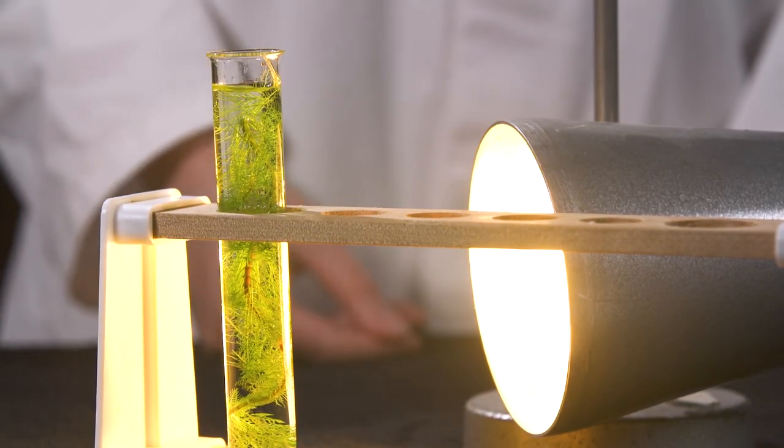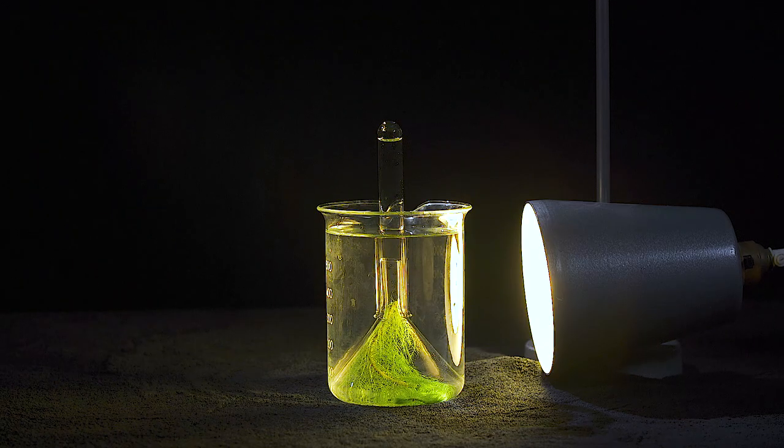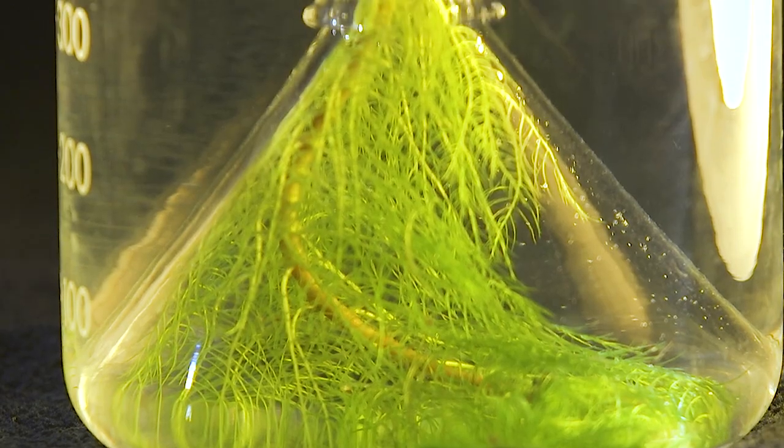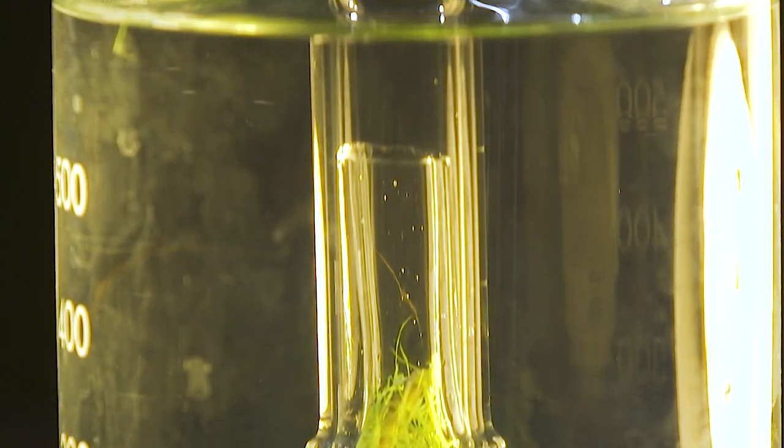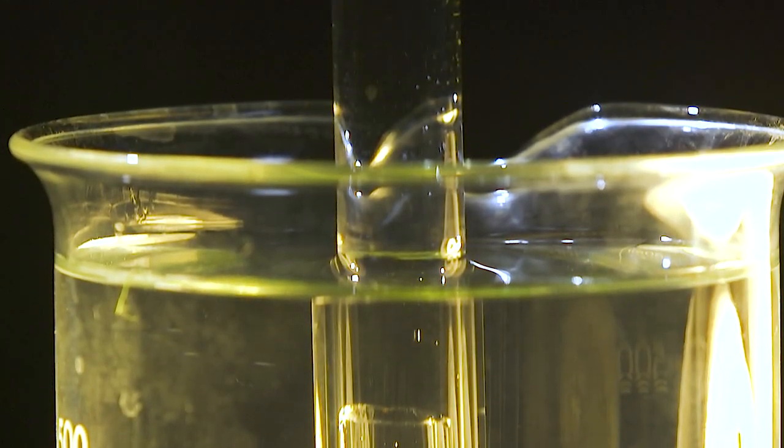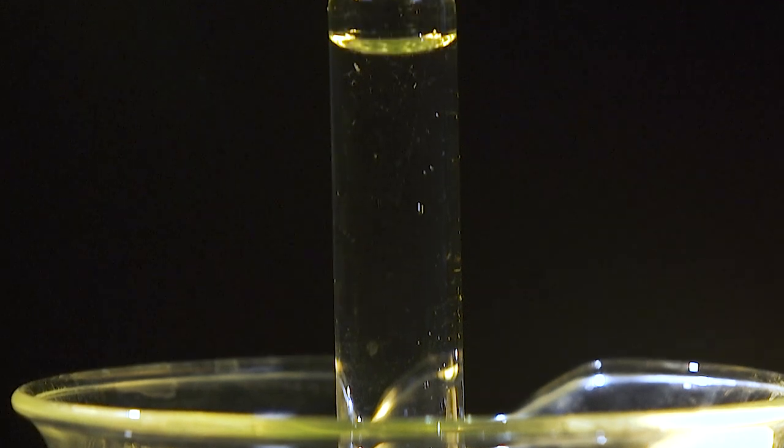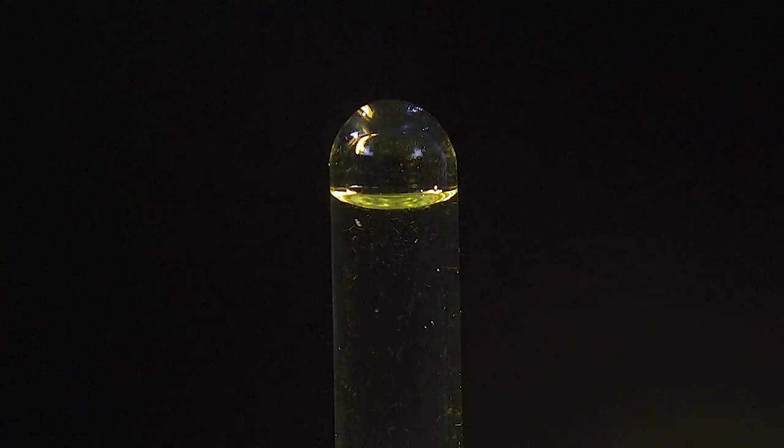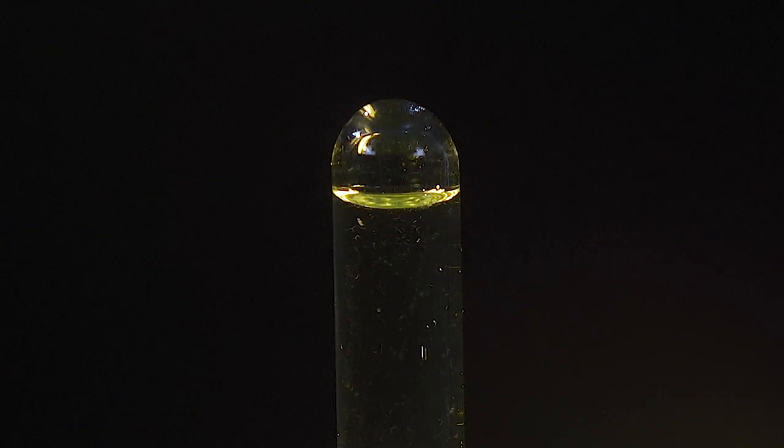As shown earlier, pondweed can also be placed in a beaker under an upturned funnel with a test tube over the top, so that the bubbles produced move up the neck of the funnel and displace the liquid in the test tube. You need to use a glass funnel for this setup because students will not be able to see the bubbles through a plastic funnel.